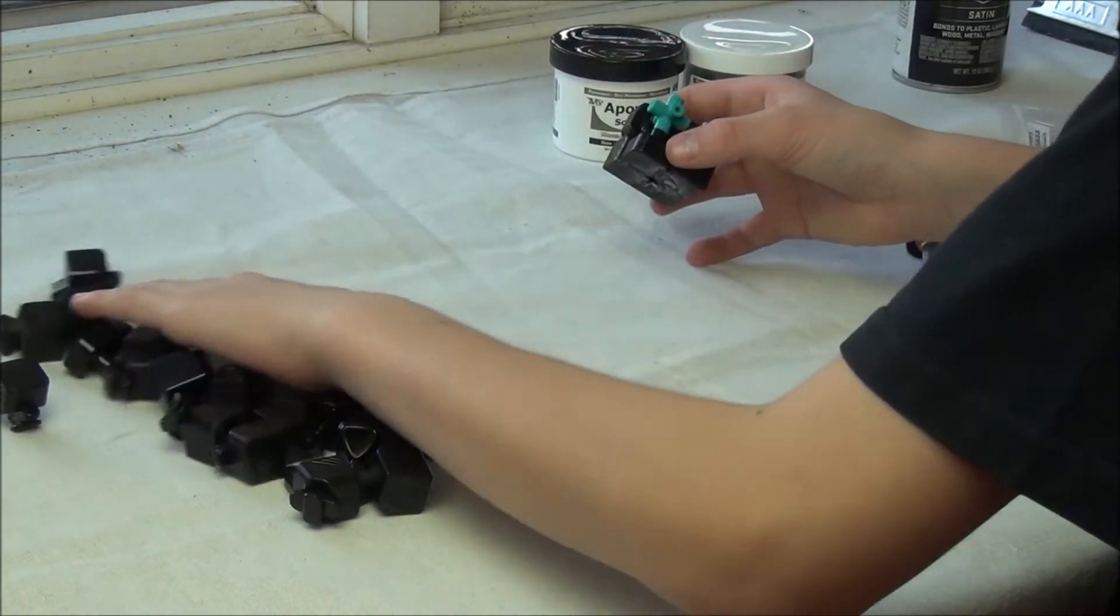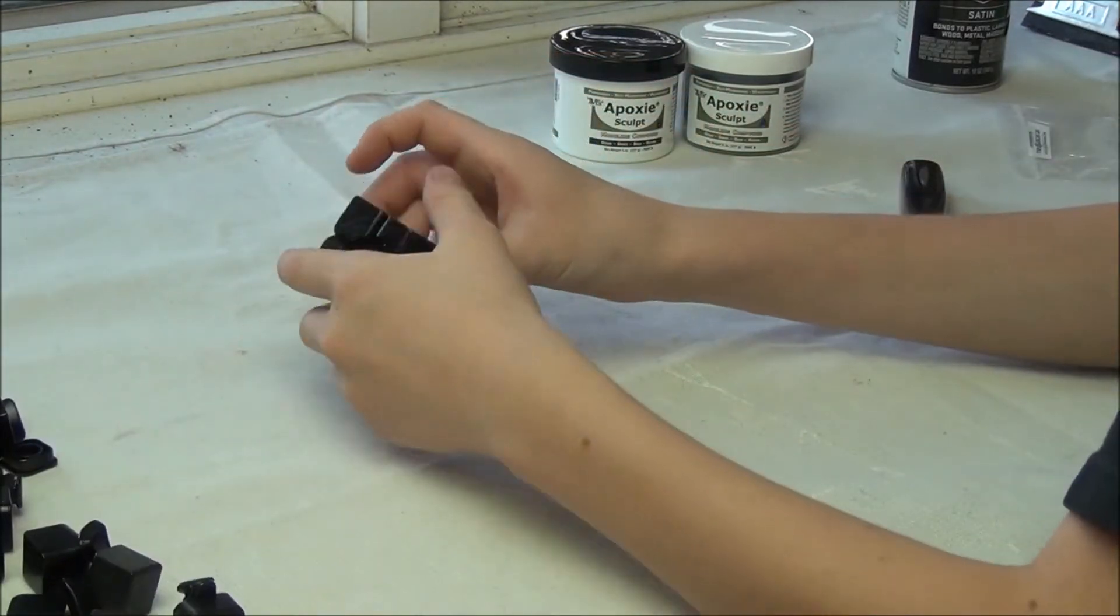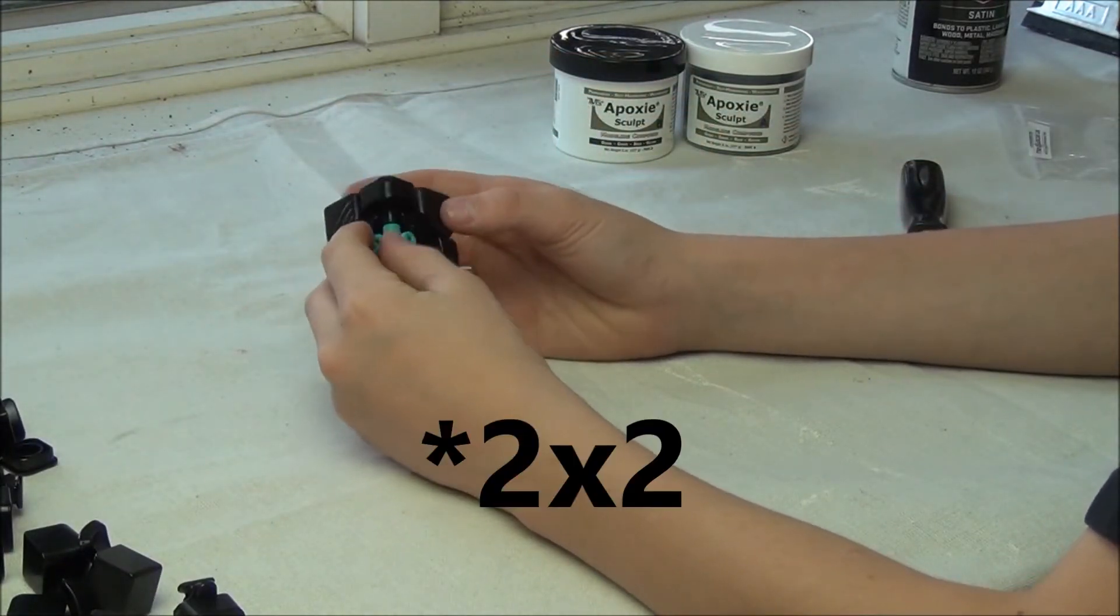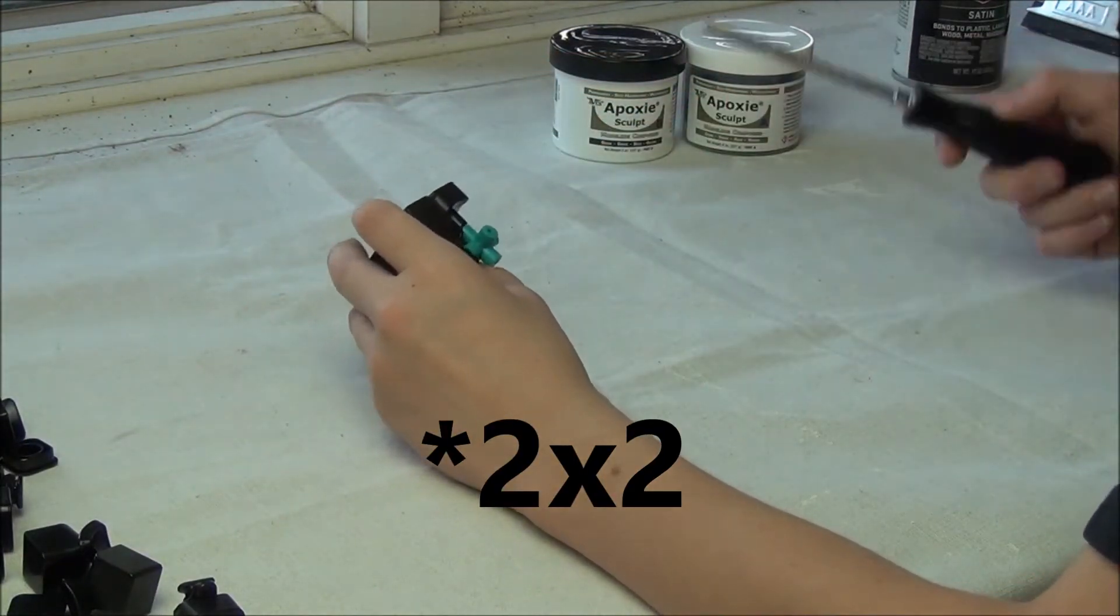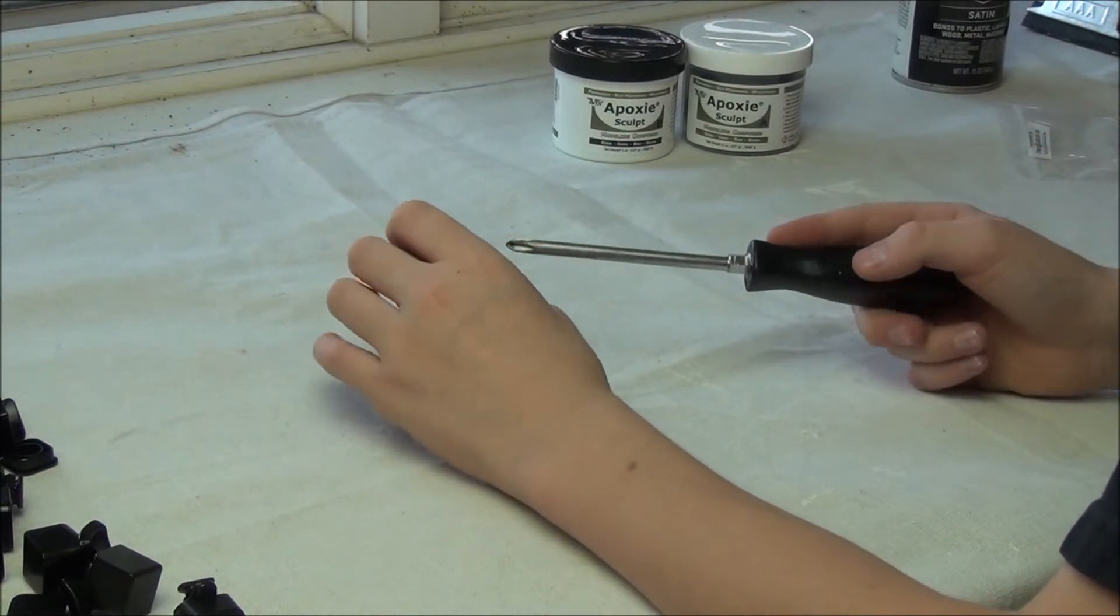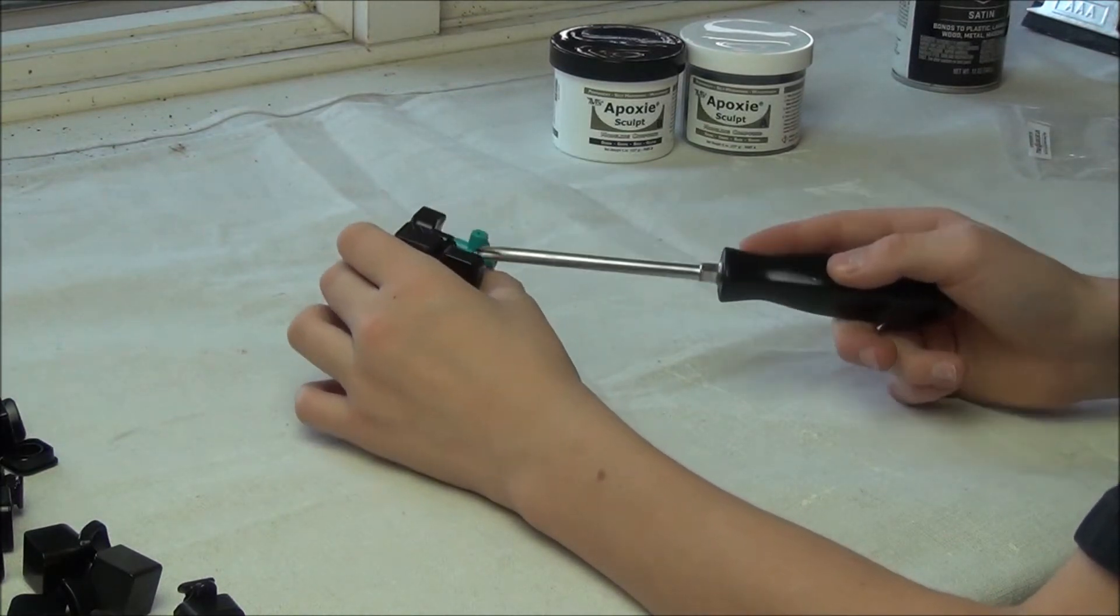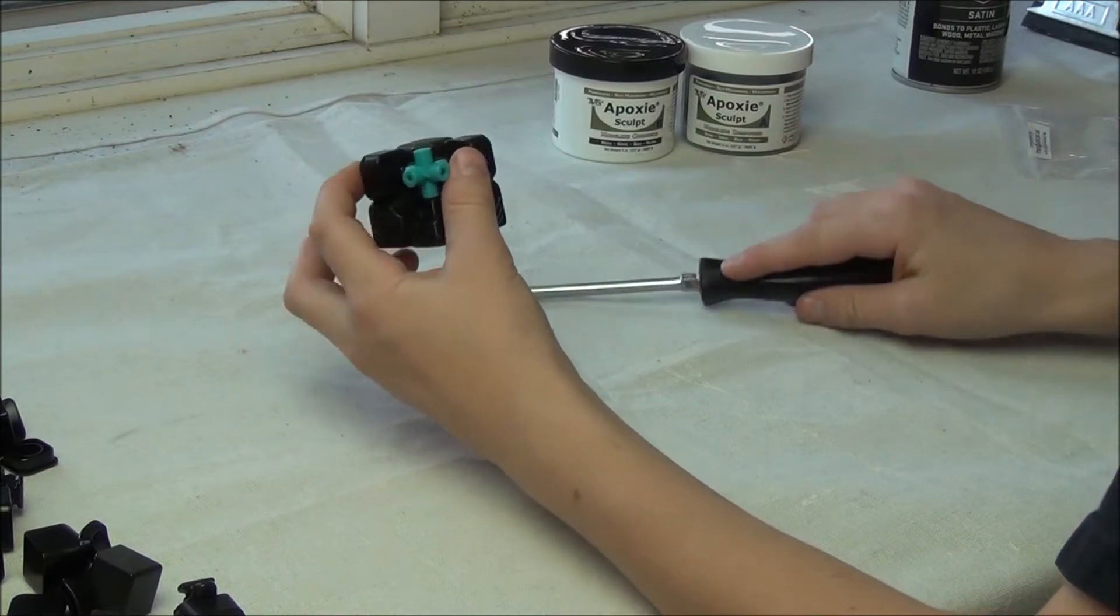Alright, so we have this puzzle disassembled and this is our 2x2 block of pieces. As you can see, these are all the parts over here that we're going to be filling with epoxy sculpt.